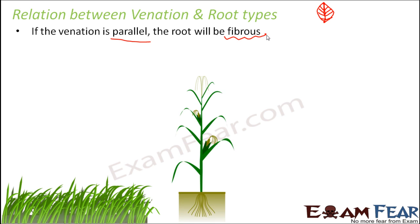And what if the venation is reticulate? In that case it is just the reverse. Let's look at examples of plants where we have parallel venation and therefore fibrous roots.